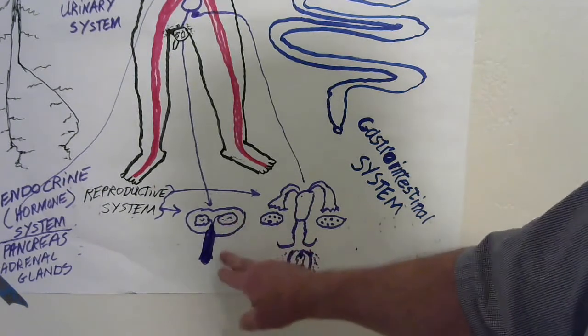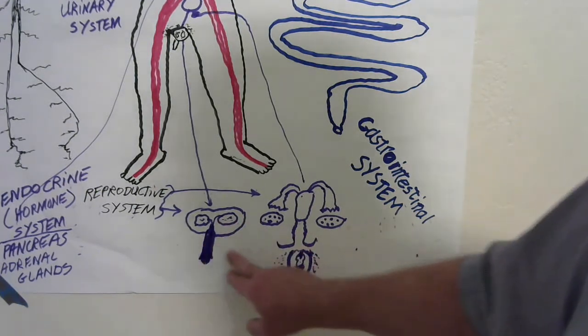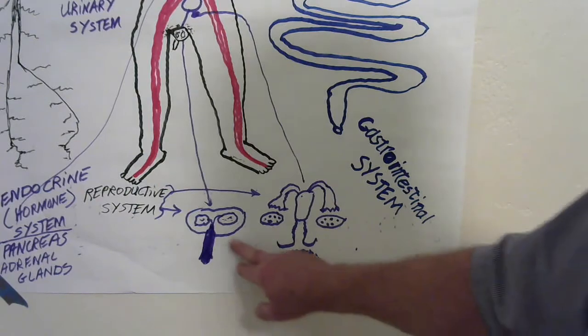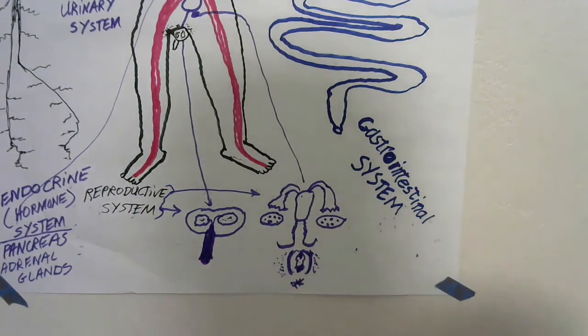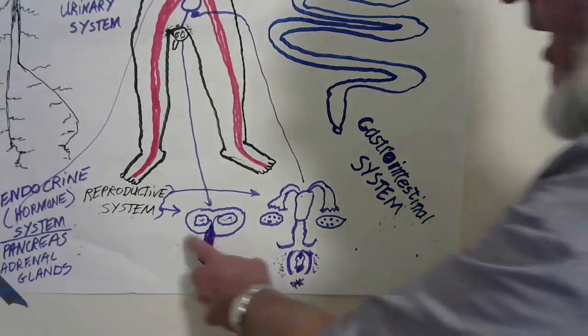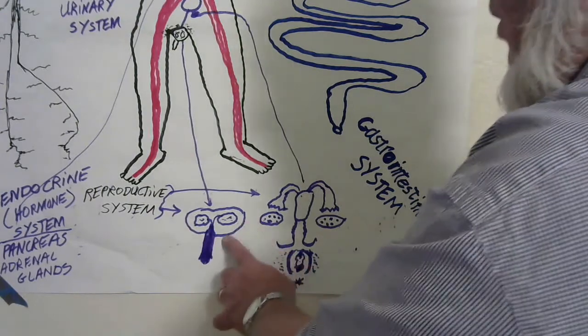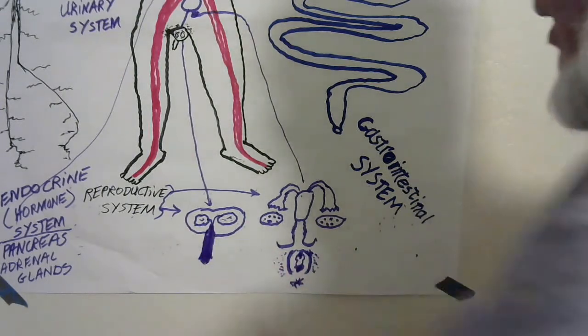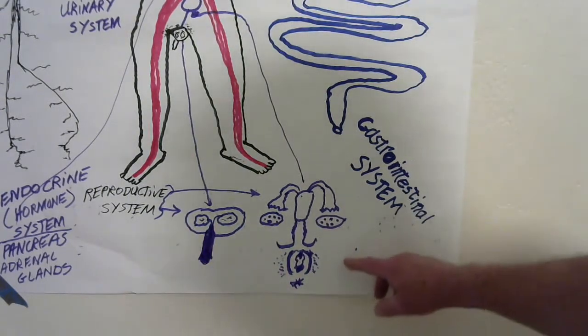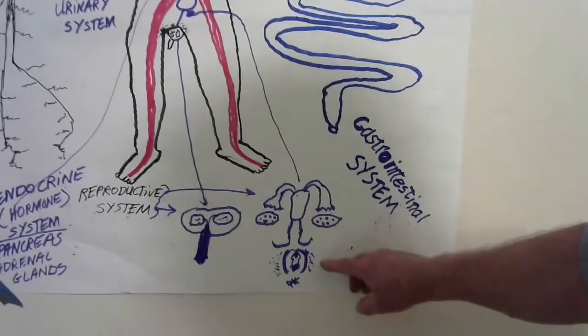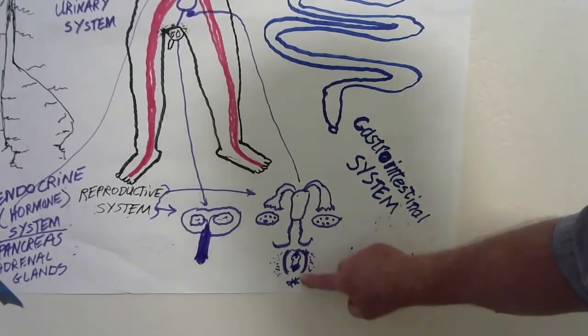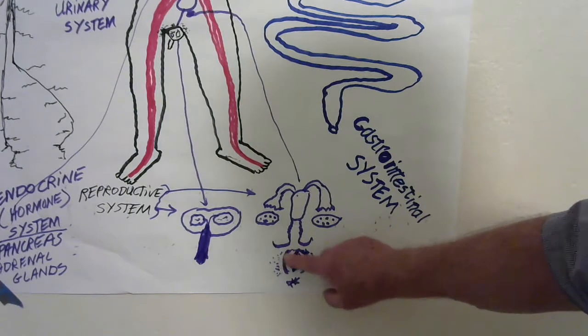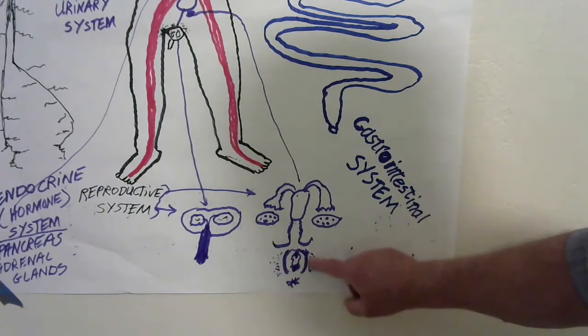The external genitalia - the outside parts you see - for men includes the scrotum and penis. The external part of female anatomy includes the labia and pubic hair.